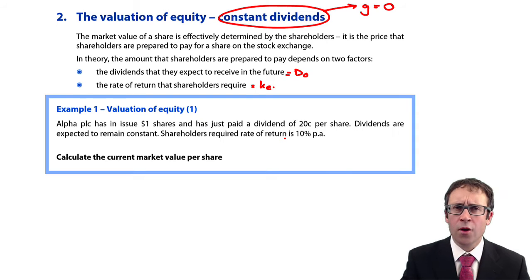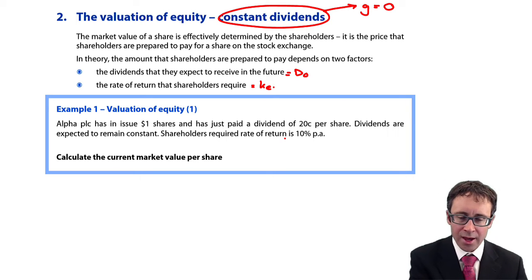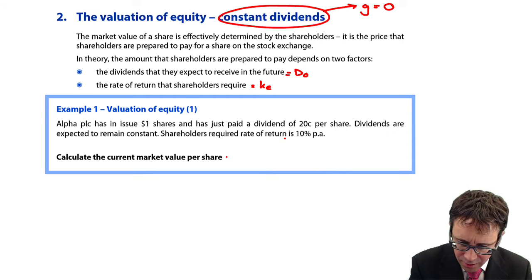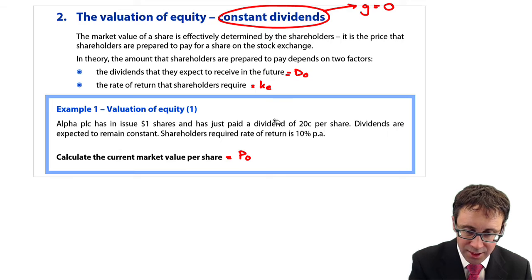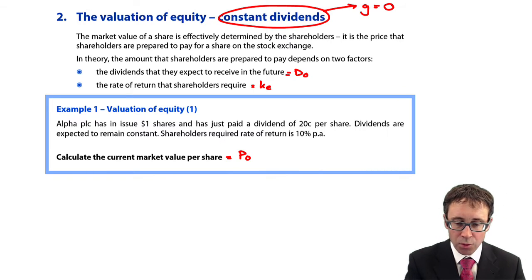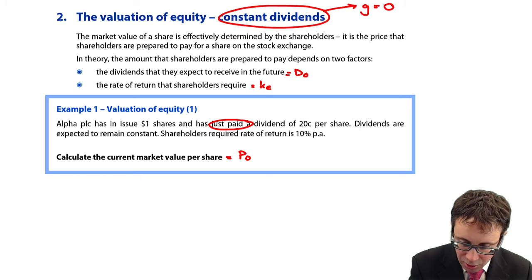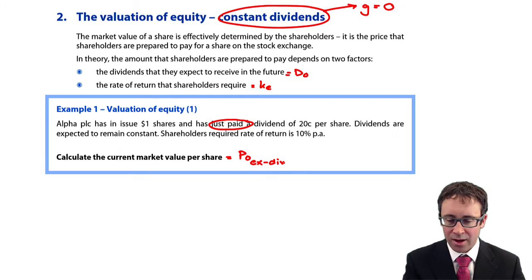If you want the theory, go way back to the F1 lectures. Let's just crunch the numbers — we'll talk about the theory as we go along. It wants us to calculate the current market value per share, so that wants us to work out P0. Alpha PLC has in issue $1 shares and has just paid a dividend. In the first few examples, we're going to look at our ex-dividend (XD) valuation.